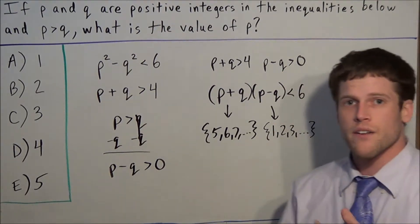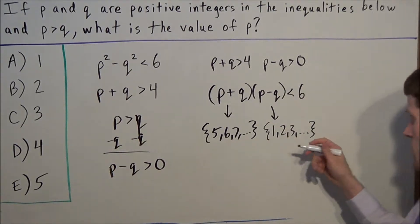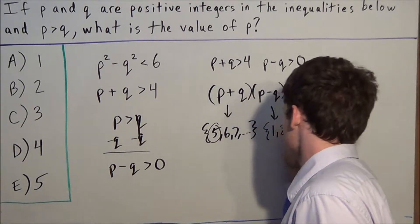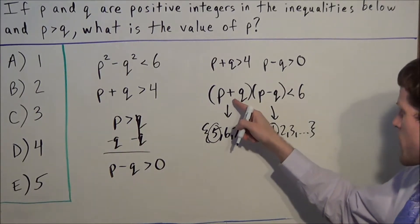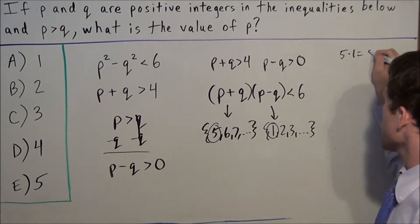Now we go through a quick trial and error. We can quickly rule out many numbers. Looking at 5 and 1 first: 5 × 1 = 5, and that's less than 6, so it checks out.